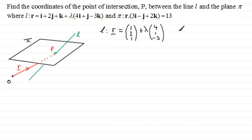And for the plane π, we've got R dotted with column vector (3, -1, 2) and that equals 13. Now I'm going to call each of these two equations, we'll number them 1 and 2.